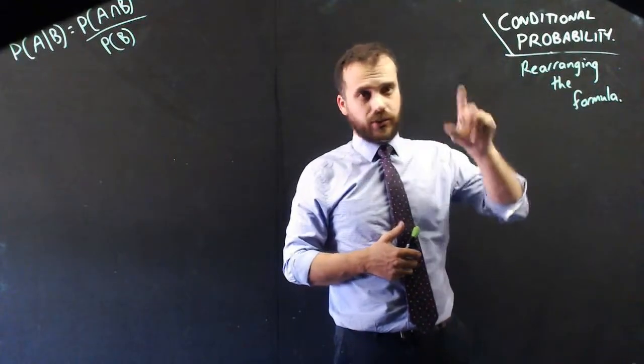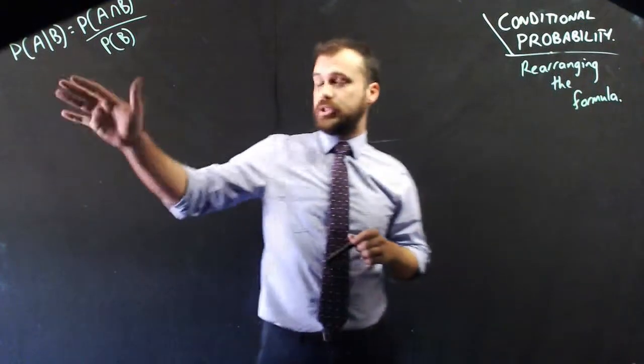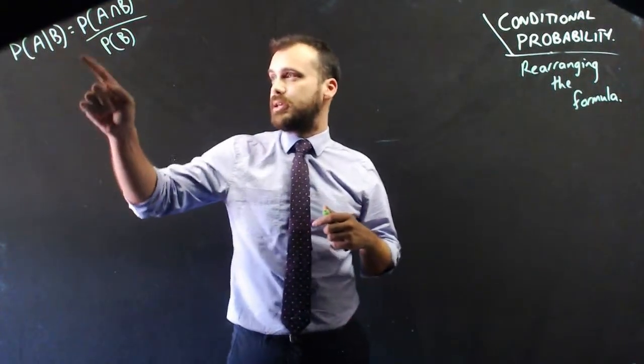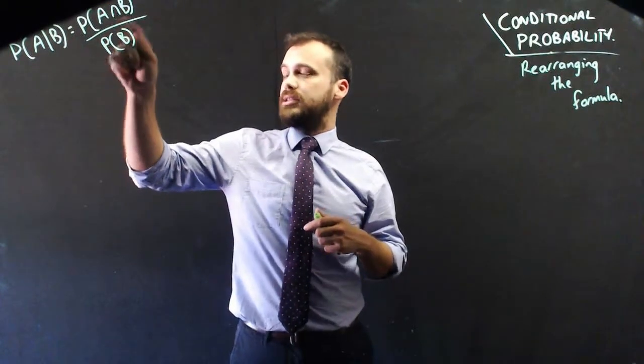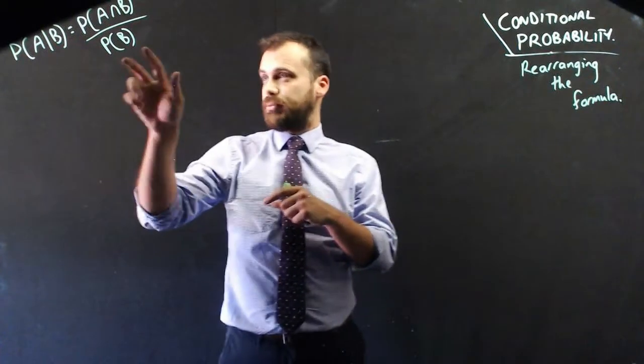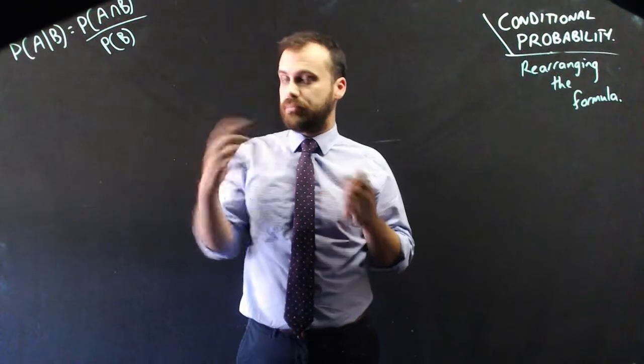Now, of course, with all formulas, if you've got one, you can rearrange it and find out other stuff as well. So if I've got a conditional probability formula like A given B equals the probability of A intersection B over the probability of B, I can rearrange it to find the probability of B, or I can rearrange it to find the probability of A intersection B.